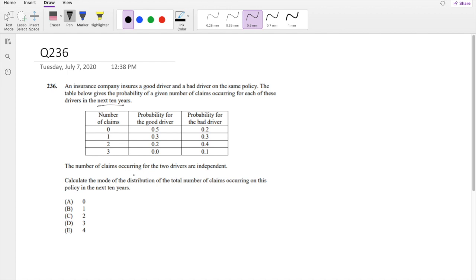The number of claims occurring for the two drivers are independent. Calculate the mode of the distribution of the total number of claims occurring in the next 10 years.